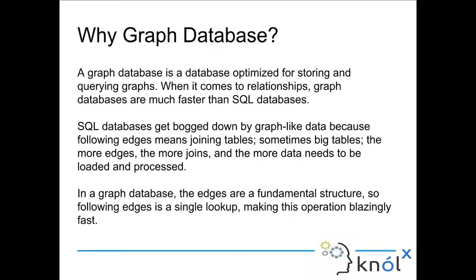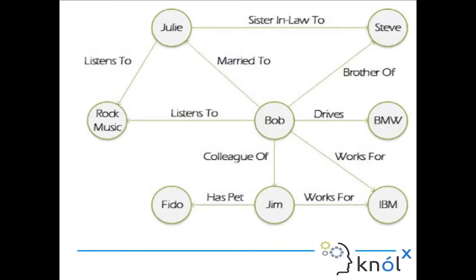Is a bi-directional edge similar to an undirected graph? No, it will not be similar to an undirected graph. As I just told you, if you mark an edge as reverse, for you it will appear bi-directional — that is an abstraction — but if you look behind the scenes, there will be a new edge created between the two nodes going in the reverse direction of the original edge. So it will still be unidirectional, not truly bi-directional.